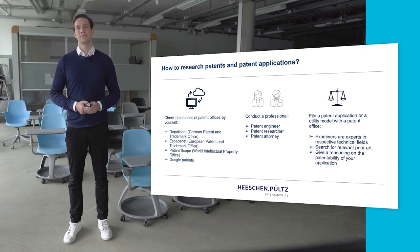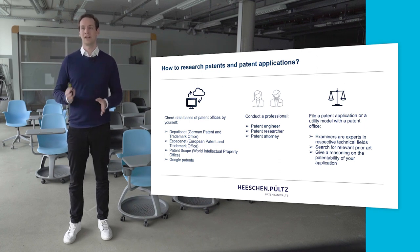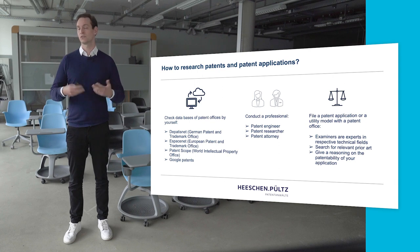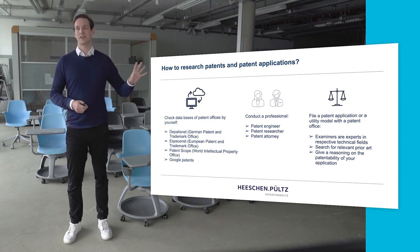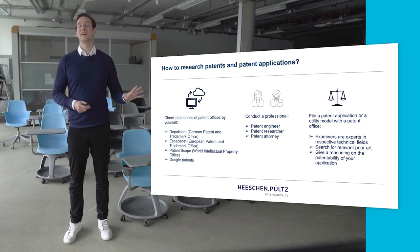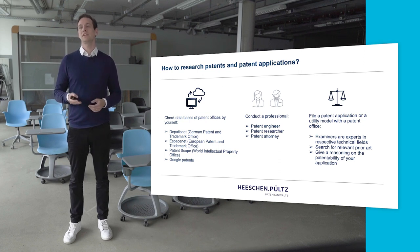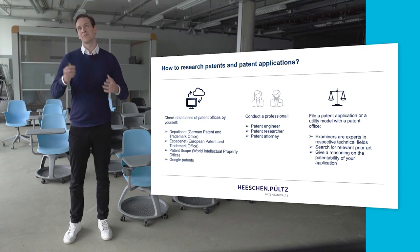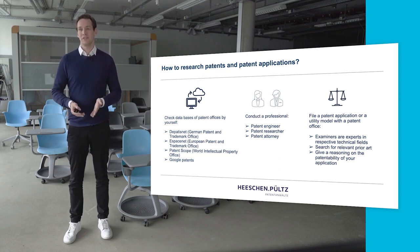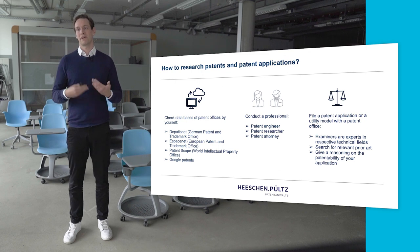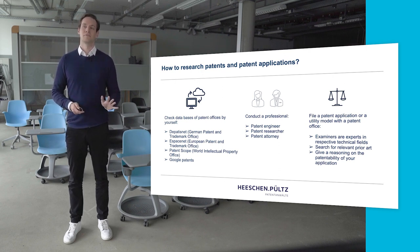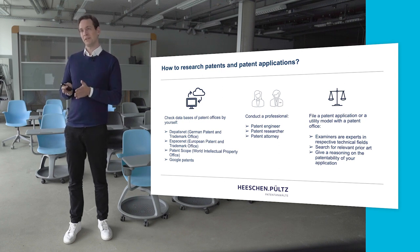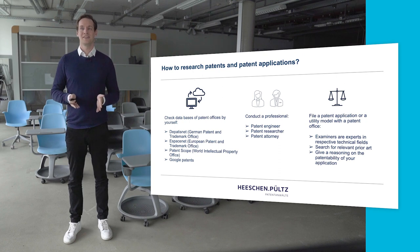Another option to consider is filing a patent application yourself. When you file with an office and request an examination or search, examiners who are experts in technical fields will search prior art — including patents and patent applications relevant to your idea. So you will automatically get a search while filing a patent application. Sometimes it makes more sense to just file and have that search included, or do a prior art search if you're not sure if the idea will work, keeping in mind you'll pay for it either way.